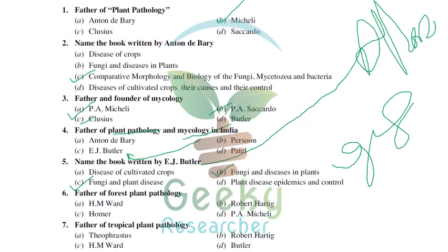The father of forest plant pathology is Robert Hartig. H.M. Ward is considered the father of tropical plant pathology, whereas Robert Hartig is considered the father of forest plant pathology. Robert Hartig wrote a few books including one on diseases of forest trees.